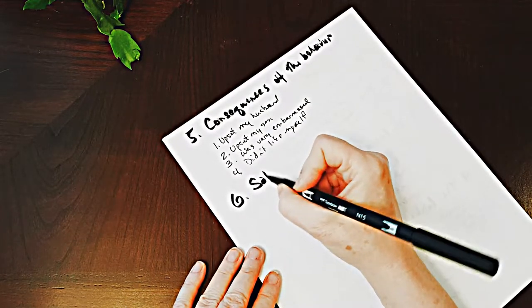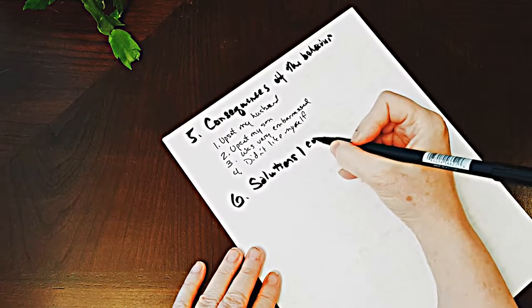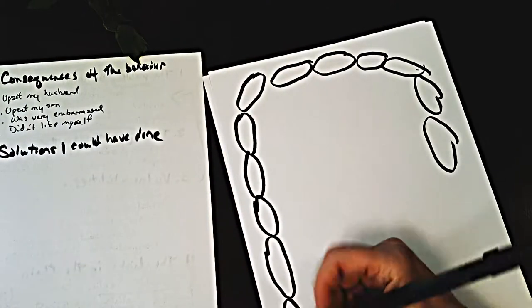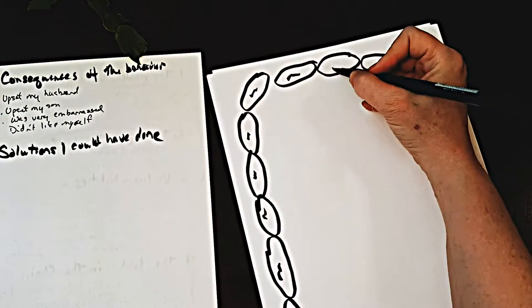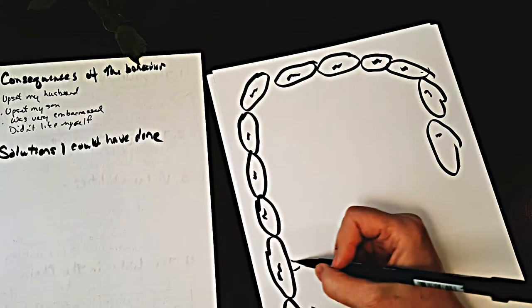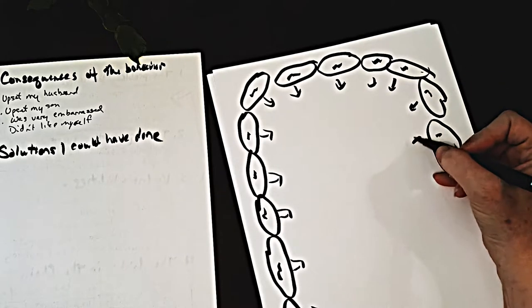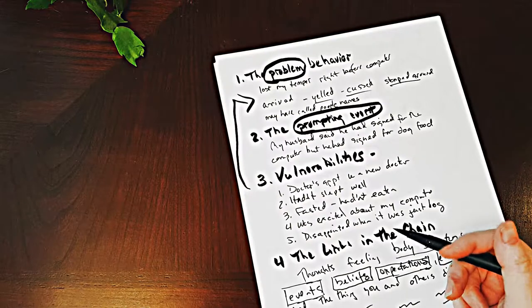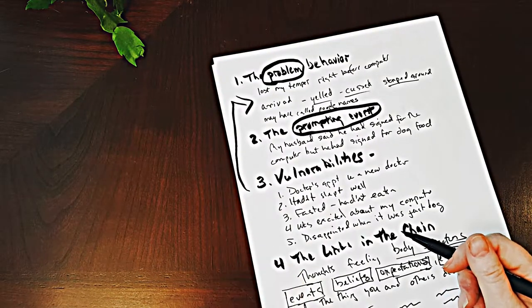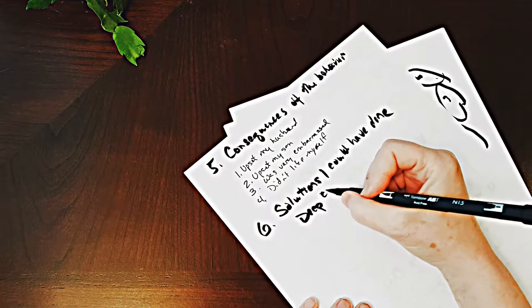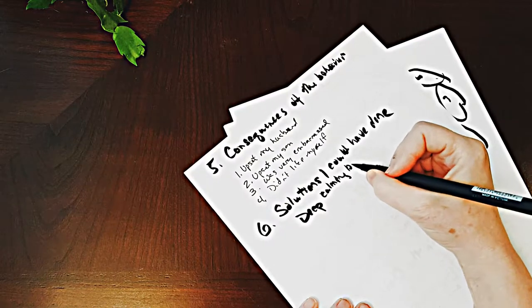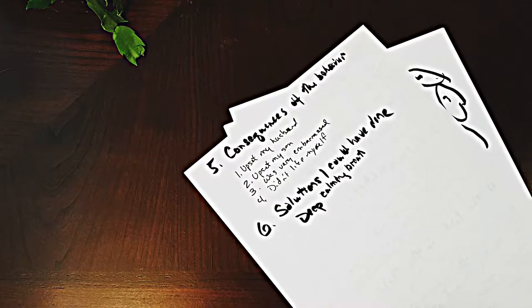This is where we look at solutions I could have done. Remember, everything is in excruciating detail. For each link in the chain, what could I have done differently? When my husband said he signed for it, I should have taken a deep, calming breath to calm myself. I know how to do this, but I wasn't able to use my coping skills that time. I should have taken a deep breath and asked him to clarify.